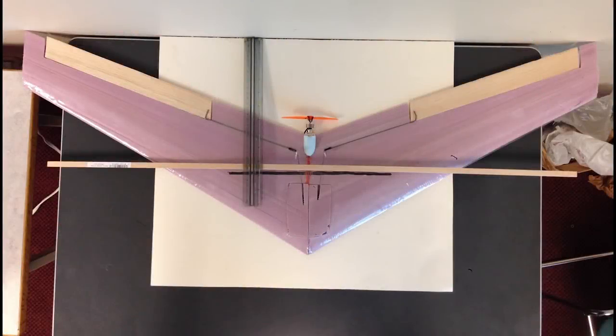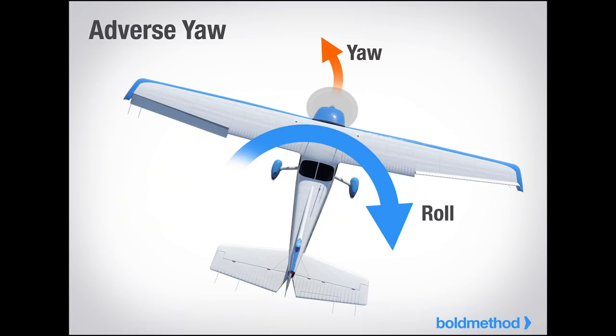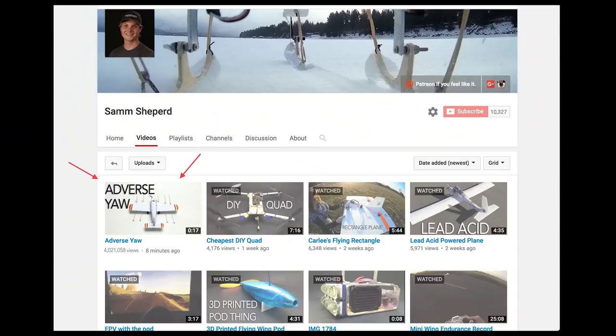In a previous video, I mentioned I think I'll do a video about this adverse yaw thing. So here it is. Adverse yaw is a natural and undesirable tendency for an aircraft to yaw in the opposite direction that it rolls.